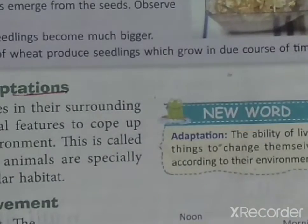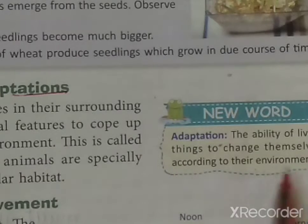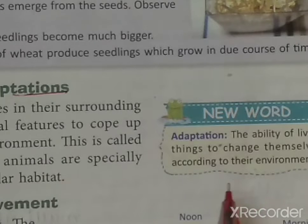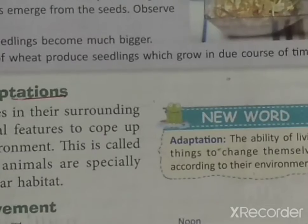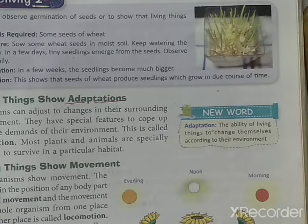Adaptation is the ability of living things to change themselves according to the environment. Living organisms have a special capability — they can get adjusted according to their surroundings.